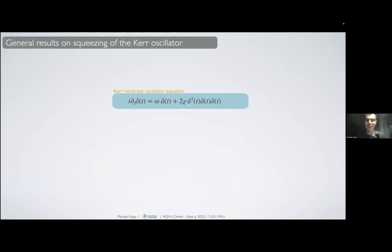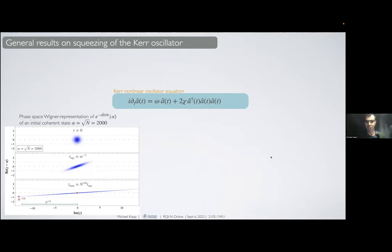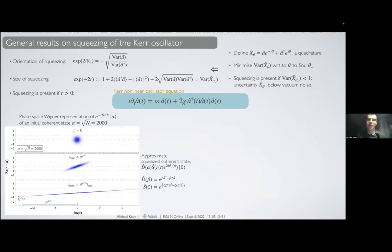What are the properties of this Kerr nonlinear oscillator equation? Interestingly, if you plug in as an initial condition the coherent state, it doesn't stay a coherent state. Here I show you a phase-space picture of the coherent state, and you see it deforms into a squeezed state. It's a deformation of the coherent state that in phase space literally looks like you are squeezing it in one direction. Interestingly, if you have the squeezing, you cannot describe it in any way classically.